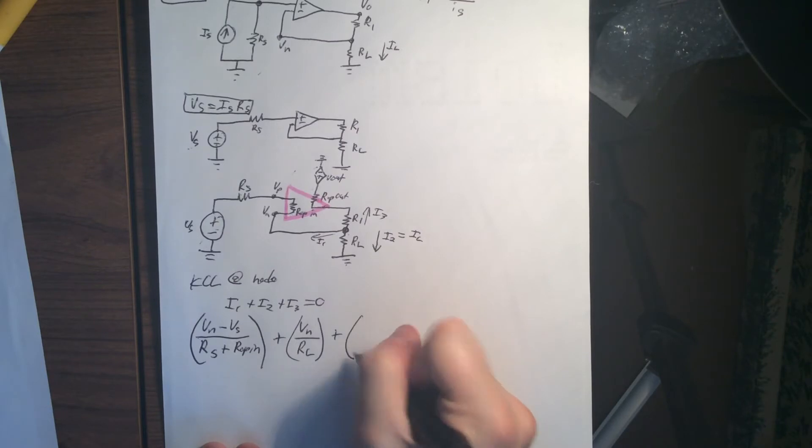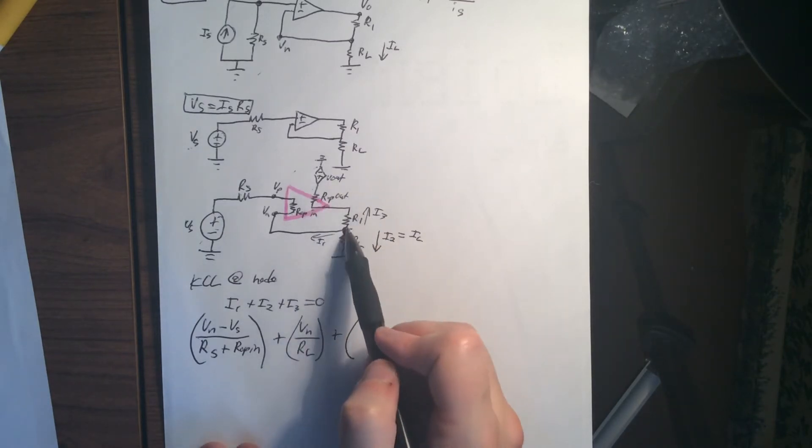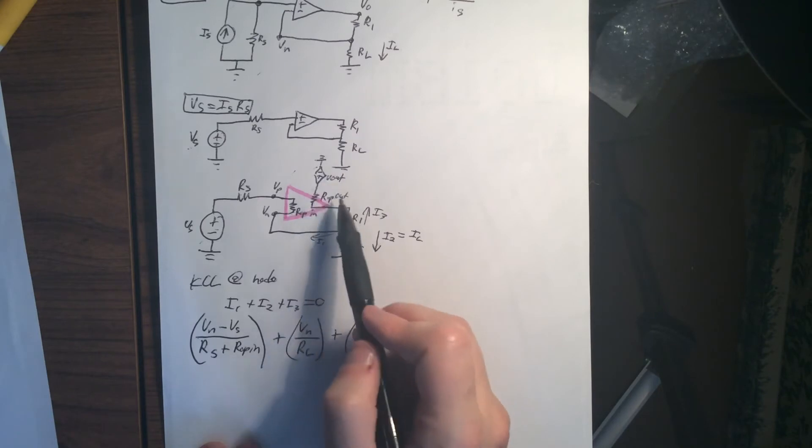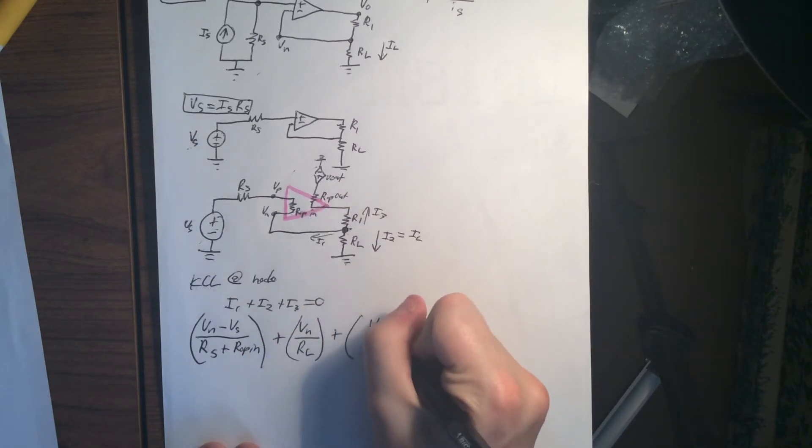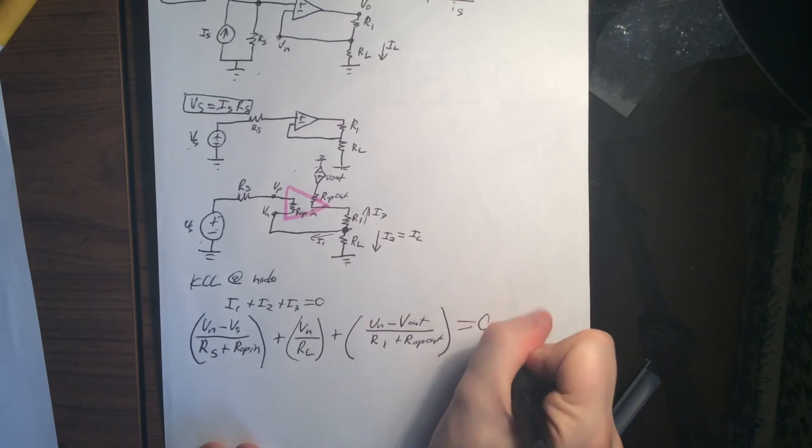And then this one is going to be, what do we've got? We've got our VN minus our voltage source over two different resistors. So VN minus Vout, divided by R1 plus ropOUT. This is going to equal to zero.